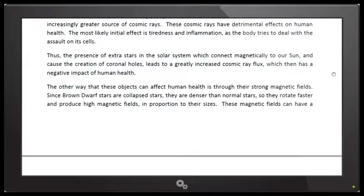The other way that these objects can affect human health is through their strong magnetic fields. Now, since a brown dwarf star is a collapsed star, they are denser than normal stars. They also rotate much faster and produce high magnetic fields in proportion to their size.